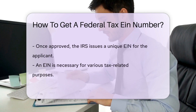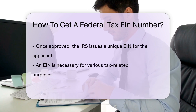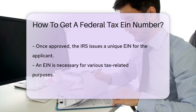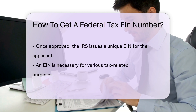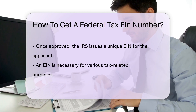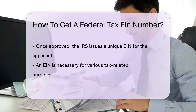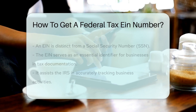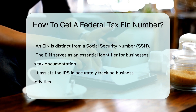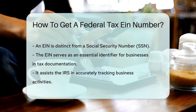It's essential to ensure all the information provided is accurate to avoid delays in processing your application. Once approved, the IRS will issue you a unique EIN, which is necessary for various tax-related purposes. Remember, an EIN is different from a Social Security number and is specifically used for business entities. It's an essential identifier for tax purposes and helps the IRS track your business activities accurately.